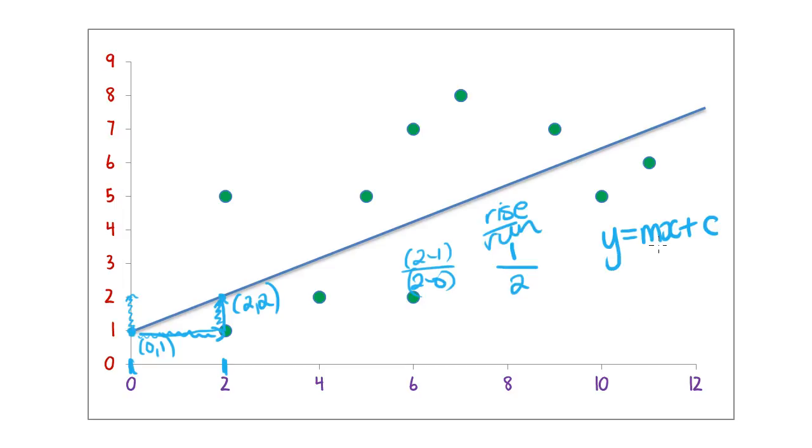Now I know my m part of the equation. I have y equals a half x plus c. And the plus c part is just going to be the y-intercept, which is positive 1. That's where it was crossing here. So plus 1. And that's the equation of this line.